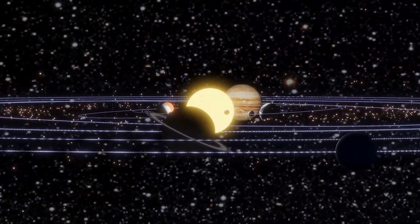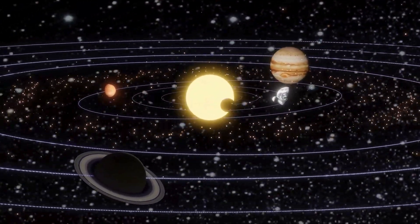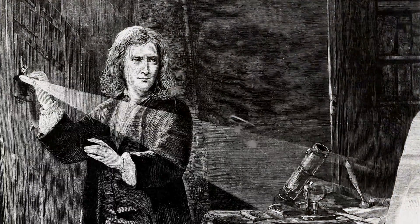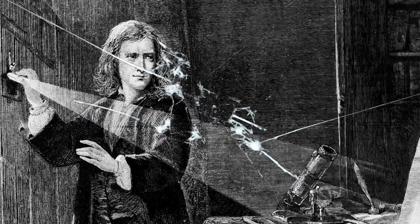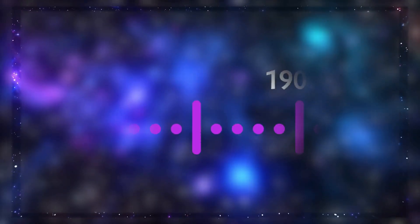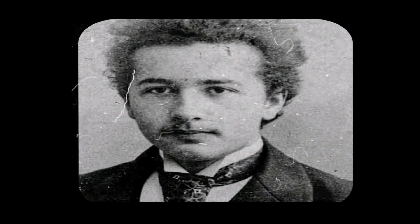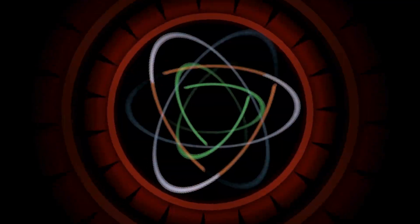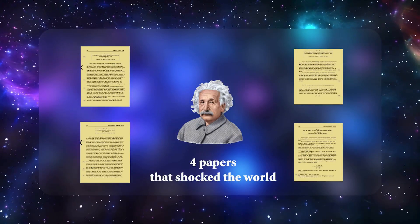The orbit of Mercury, for one, kept playing hard to get with Newton's predictions. Over time, these small cracks hinted that maybe the universal force wasn't so universal after all. In 1905, a young Albert Einstein was working in a Swiss patent office, but also tinkering with ideas that would reshape physics. It was this year when he wrote four groundbreaking papers in one miracle year.